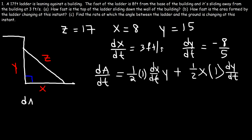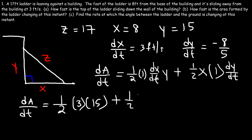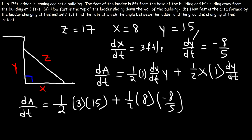Now we plug in the values. This gives us one-half times dx/dt, which is 3, times Y, which is 15, plus one-half times X, which is 8, times dy/dt, which is negative 8/5. Before continuing, let's note the units: X and Y are in feet, time is in seconds, so dy/dt is feet per second.